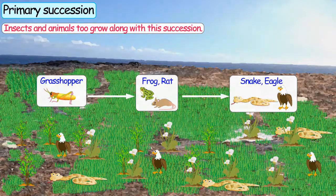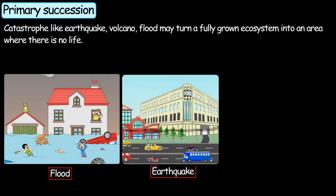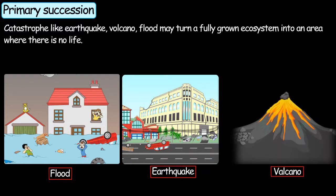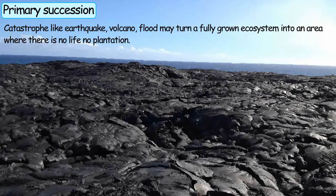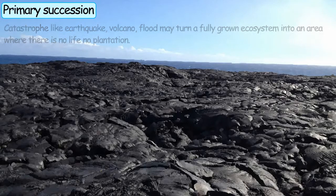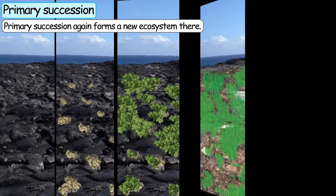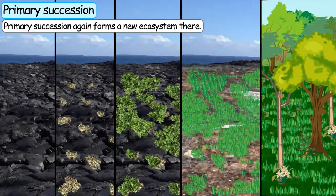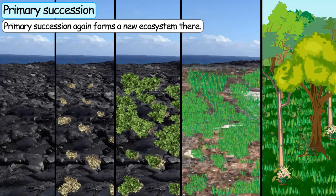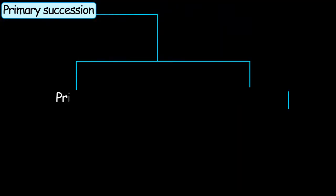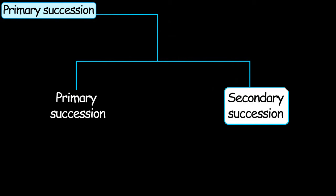Wasn't this so interesting? Catastrophes like floods, earthquakes, and volcanoes may turn a fully developed ecosystem into an area where there is no life or no plantation. And yet a new ecosystem can grow there — this is called primary succession. Now we will learn what is secondary succession in our next section.